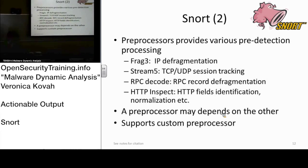Snort comes with different layers of pre-detection processing. There is FRAG3, STREAM5, RPC decoder, and HTTP inspect. FRAG3 and STREAM5 deal with layer 3 and layer 4 — the IP layer and TCP layer. The others are application protocol specific.